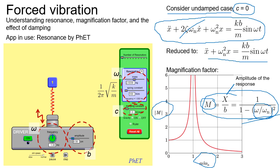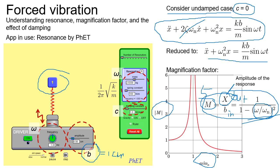To give an example: capital X and B can be thought of as output and input respectively. B is the amplitude of the driving force — our input — and capital X is the amplitude of the response — our output. For instance, if B is set to 1 cm and the magnification factor M is 5, then the response amplitude X will be 5 cm.